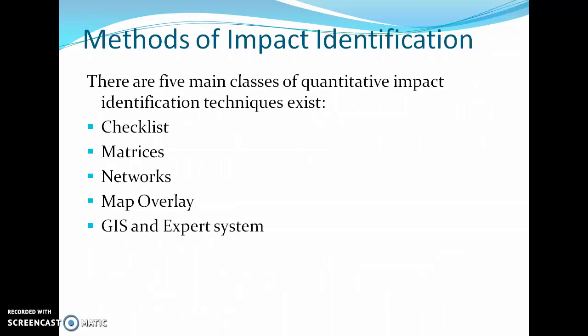The methods of impact identification are: first is checklist, second is matrices, third is networks, fourth is map overlay, and last is GIS and expert system. These are the five methods used for impact identification of various development activities and their impact on environmental issues. Now let's see them one by one.